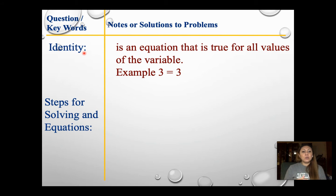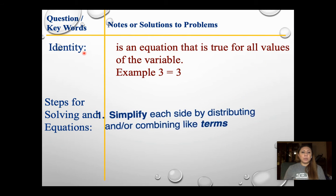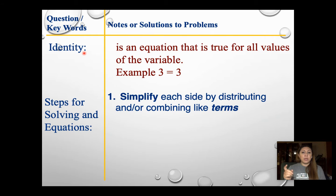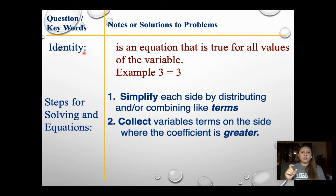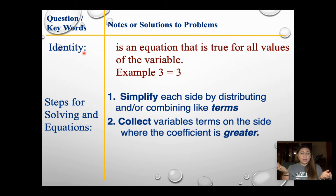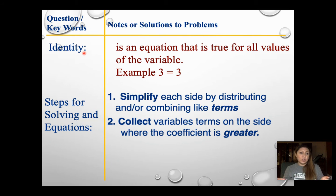So how do you solve equations? Step one: simplify each side by distributing or combining like terms on both sides. Step two: collect the variables on one side. I like to put them wherever the coefficient is bigger — so if one side is a 2 and the other is a 10, I'll move the 2 over to the 10 side because I don't like dealing with negatives. You could move everything to the left side, but I tend to do it this way because it makes life a little bit easier.